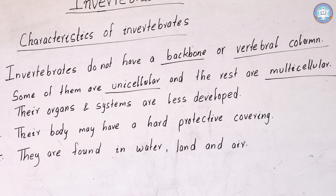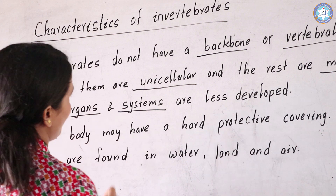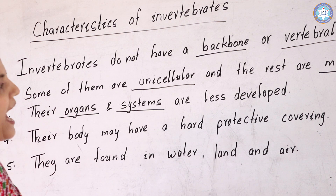Their organs and systems are less developed. Various types of organs — like respiratory organs, digestive organs, or any system — are less developed, because these types of animals are primitive and very less developed.